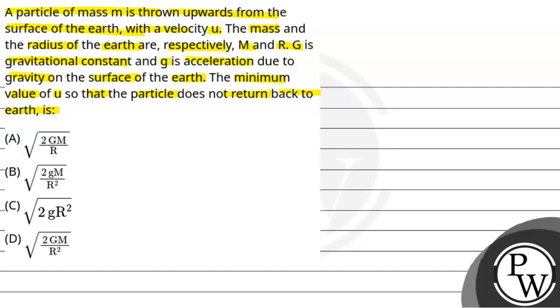So we have to say that m is a particle of mass which is thrown upward from the surface of earth with the initial speed u. The radius of the earth and the mass of the earth is M. Capital G is gravitational constant, small g is acceleration due to gravity on the surface of earth. So we have to find out the minimum value of u so that the particle does not return back to the earth. Let's look at the solution.